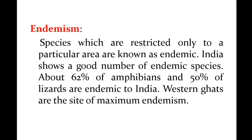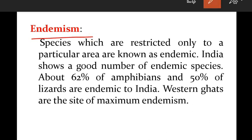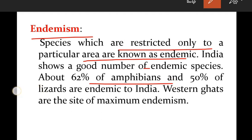There are some key features: endemism, center of origin, and marine diversity. Endemism refers to species which are restricted only to a particular area — they are known as endemic species. India shows a good number of endemic species: about 62% of amphibians and 50% of lizards are endemic to India.